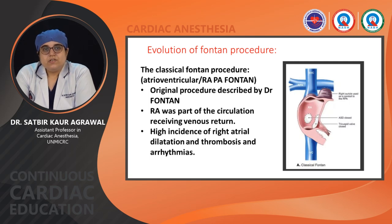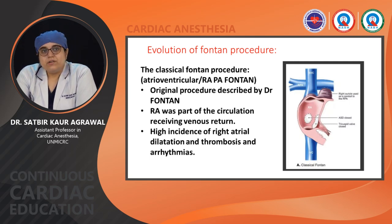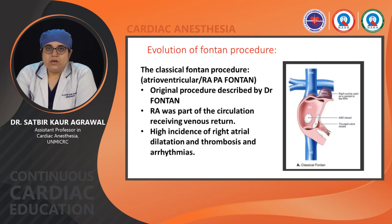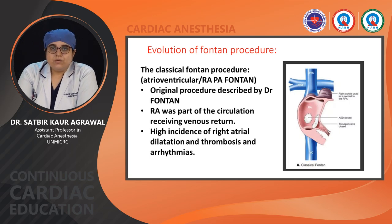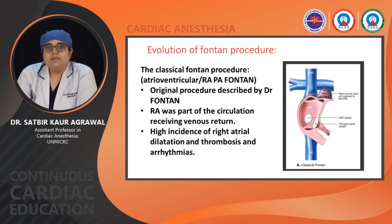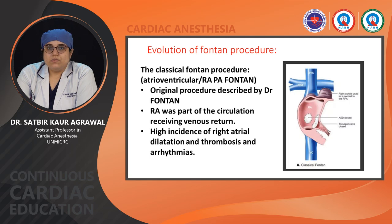Coming to how the Fontan procedure evolved: the first was the classical Fontan procedure done by Dr. Francis Fontan, also called RAPA Fontan or atrioventricular Fontan. The RA was taken as a volume chamber, included in the circulation with IVC and SVC on the two ends. ASD was closed and the tricuspid valve was closed. However, there was high incidence of right atrial dilatation, thrombosis, and arrhythmias originating from that area.